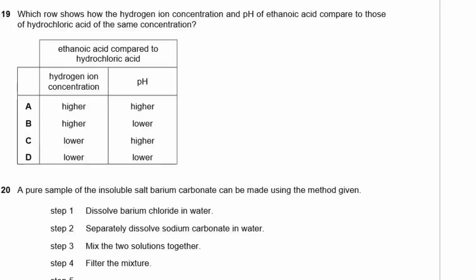Question 19. How does the hydrogen ion concentration and pH of ethanoic acid compare to hydrochloric acid of the same concentration? Ethanoic acid is a weaker acid than hydrochloric acid because it has fewer hydrogen ions in solution. Therefore the hydrogen ion concentration is lower and the pH is higher — it's less acidic. The answer is C.